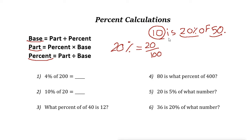So if you don't have one of these parts — for example, let's say we don't have 20% — the question becomes: 10 is what percent of 50? Here the percent is missing. The answer is 10 is 20% of 50.